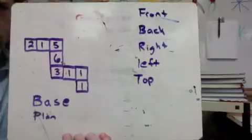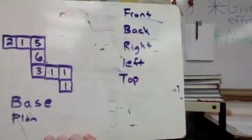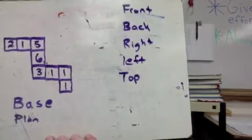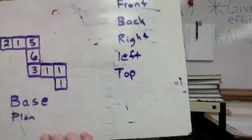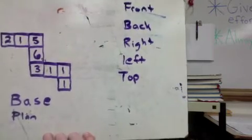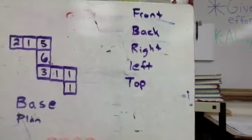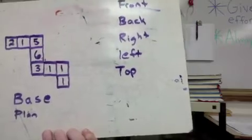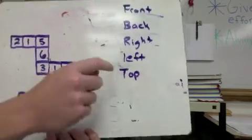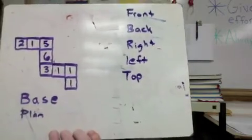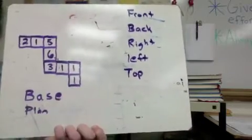Now here's some practice for you. I want you to build this base plan with actual blocks, then draw the base plan on paper or a whiteboard. After you've built the blocks, come up with the front view, back view, right view, left view, and top view. Continue the video when you're done building and finding the views, just to check how you did.